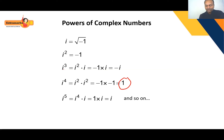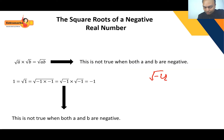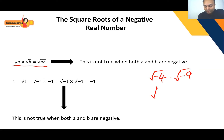Now let us move to the square root of a negative real number. Consider finding the value of √(-4) × √(-9). Some students think: apply the formula √a × √b = √(ab), so √(-4) × √(-9) = √((-4)×(-9)) = √36 = 6.